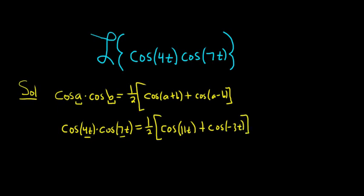So again, first we did cosine of a plus b. So 4t plus 7t is 11t. Looks OK. 4t minus 7t is negative 3t. Looks OK.